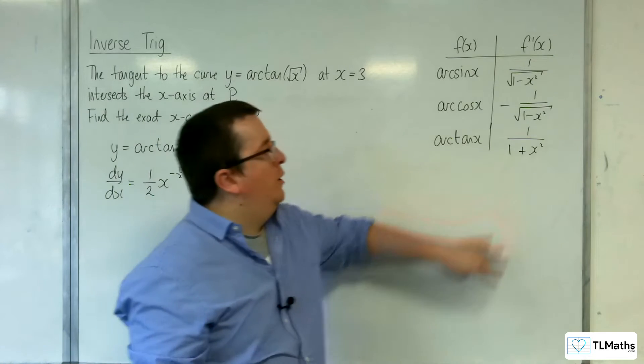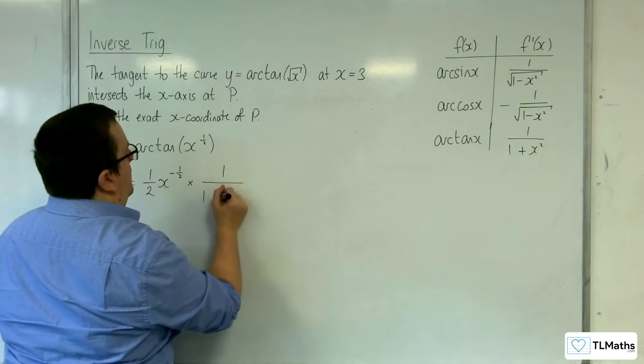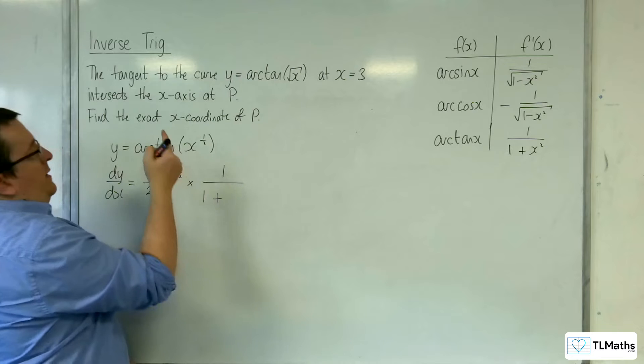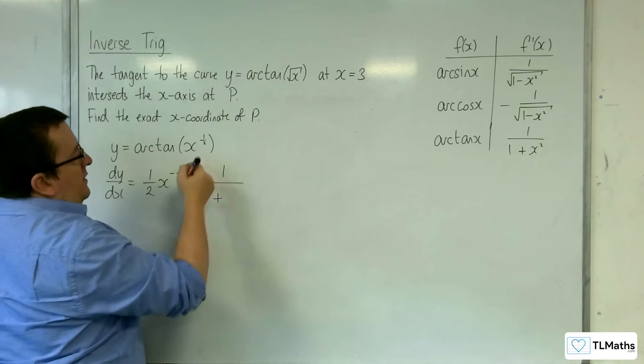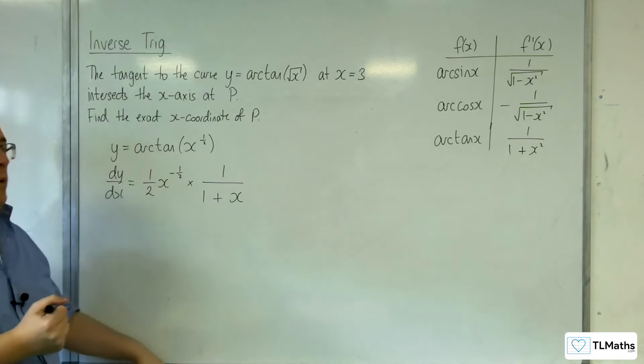Arctan differentiates to 1 over 1 plus x squared. Now in this case, the x is x to the half, and that's getting squared, so we'll just have 1 over 1 plus x.